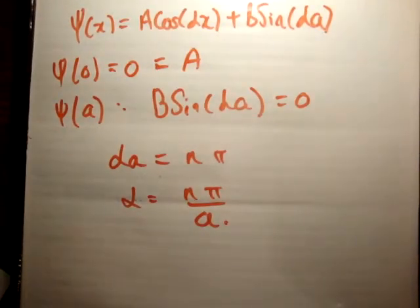Alright, is that correct? That is correct. nπ over a. Yep, that's correct.